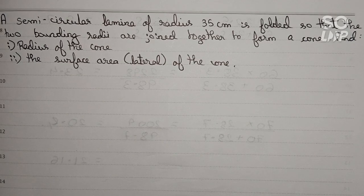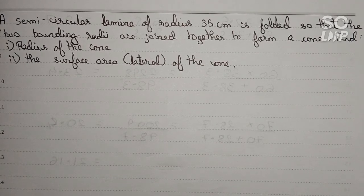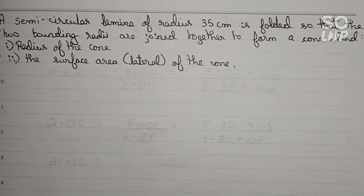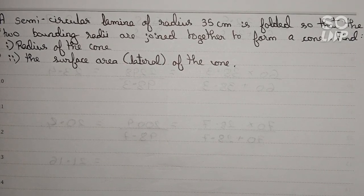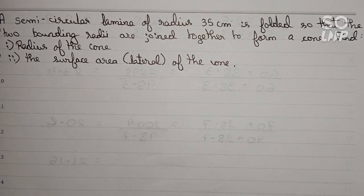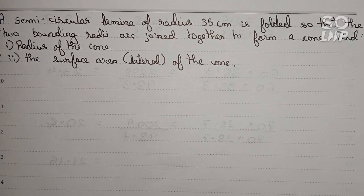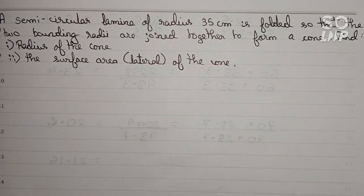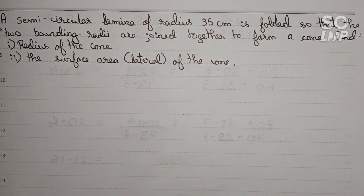Hello and welcome to this video. In this video our question is: a semicircular lamina of radius 35 centimeters is folded so that the two bounding radii are joined together to form a cone. Find the radius of the cone and the surface area of the cone.